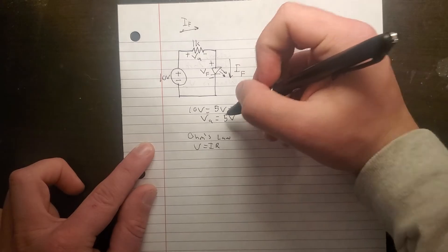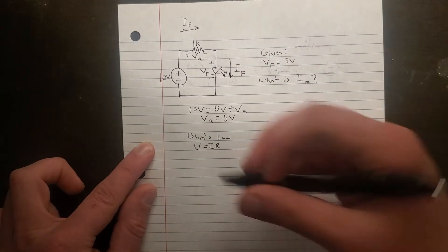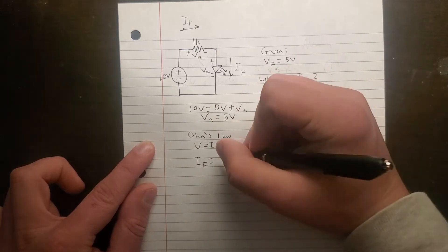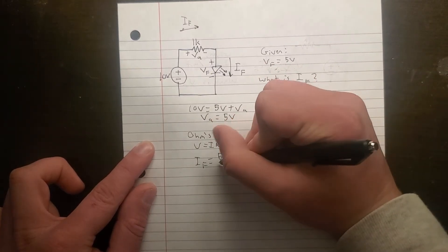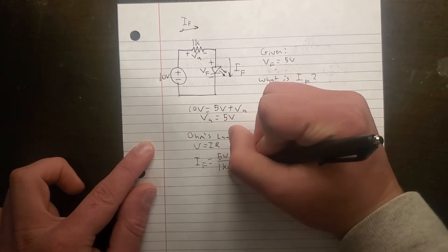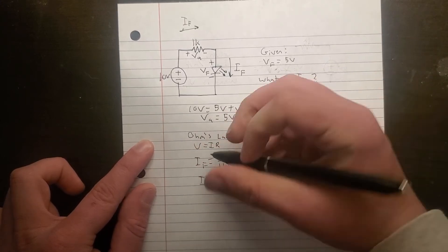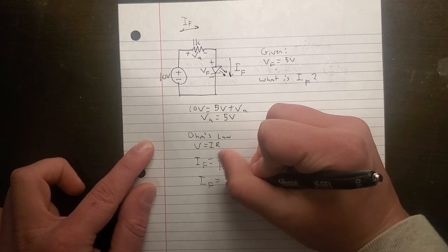Well, we have 5V, we have resistance of 1K. So IF equals 5V over 1K Ohm, or IF is equal to 5 mA.